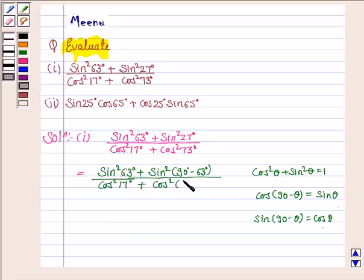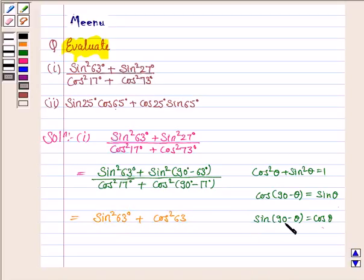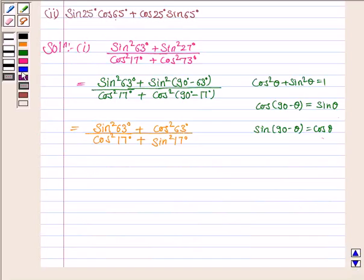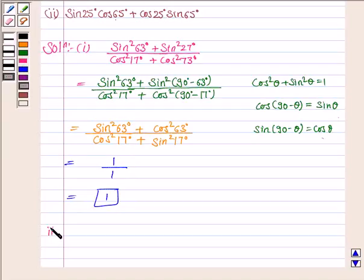Using the rule sin(90° − θ) = cosθ, we convert sin²27° to cos²63°. Similarly in the denominator, using cos(90° − θ) = sinθ, we get sin²17°. Now applying cos²θ + sin²θ = 1, we get 1 in the numerator and 1 in the denominator. So the answer to part one is 1. Let's now discuss the second part.